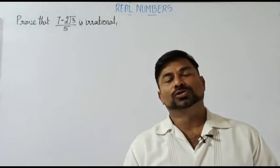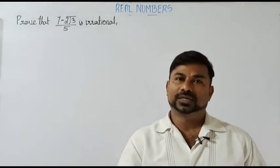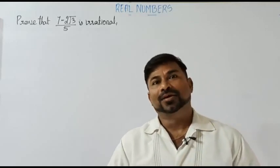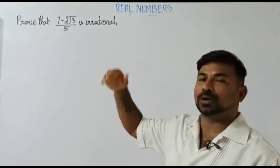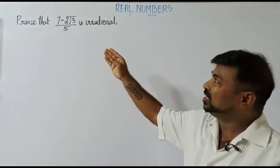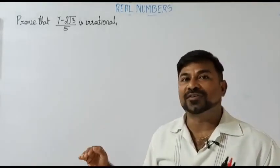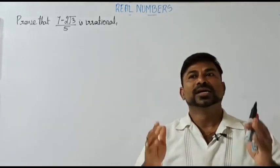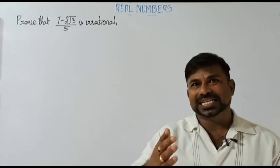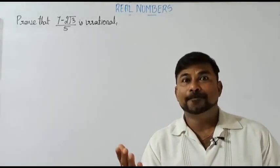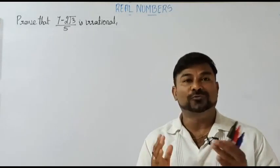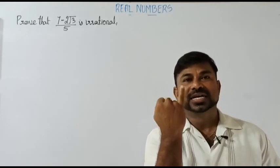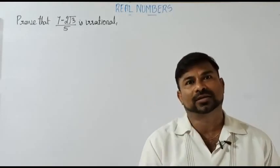Hello everyone, myself Maruti welcoming you all to Ram Maruti Tutorials. In this video I'm going to explain a topic dealing with real numbers. I'm choosing a problem: (7 - 2√3) / 5, and we are supposed to prove it is an irrational number. To prove it as irrational, I am taking the contradictory method.